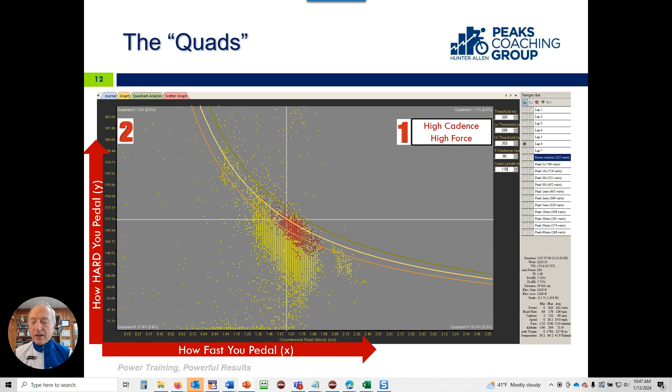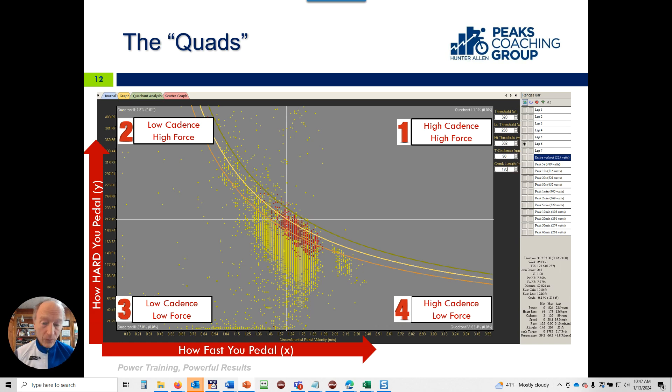Quadrant one: high cadence, high force. Quadrant two: low cadence, high force. Quadrant three: low cadence, low force. Quadrant four: high cadence, low force.